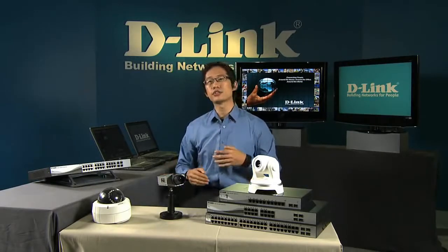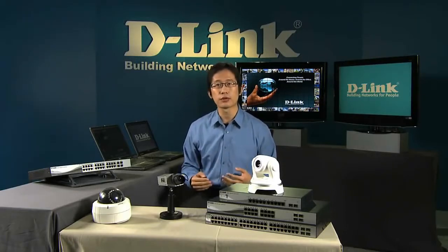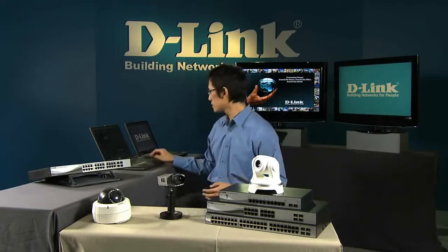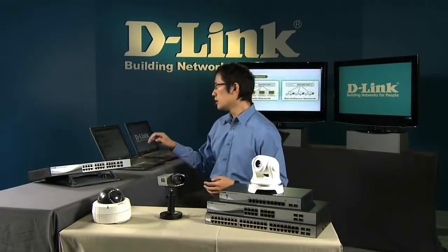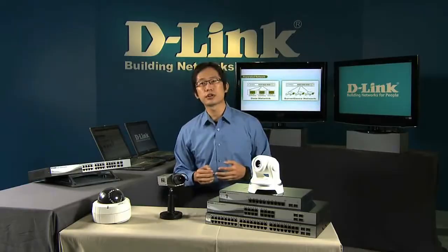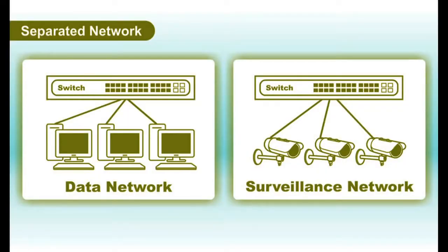ASV allows you to easily create a hybrid network capable of handling both data and surveillance network traffic. Currently, many surveillance networks are set up on different networks than an existing data network. While this can provide a secure and reliable solution, it's often very expensive to implement.